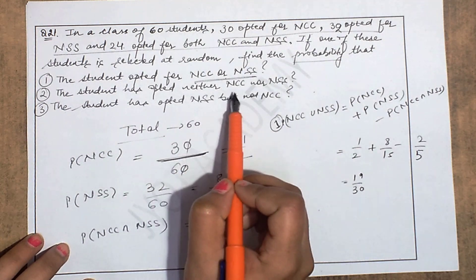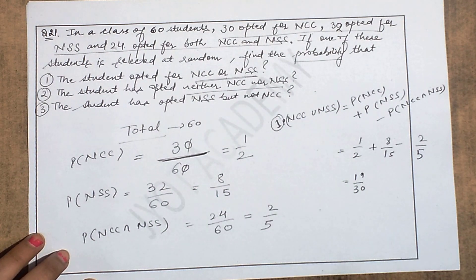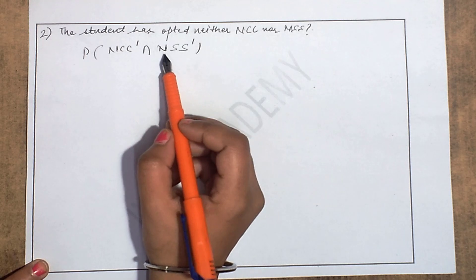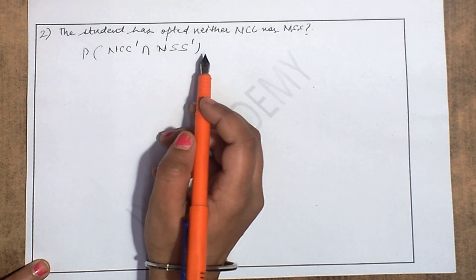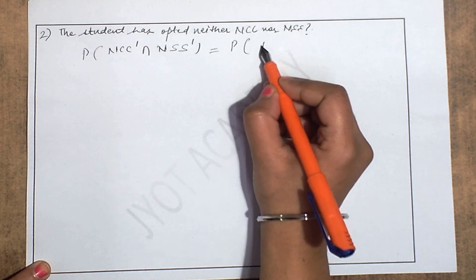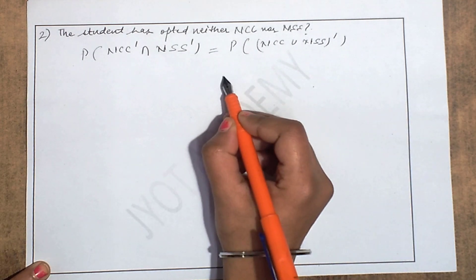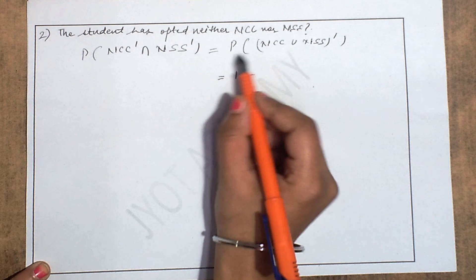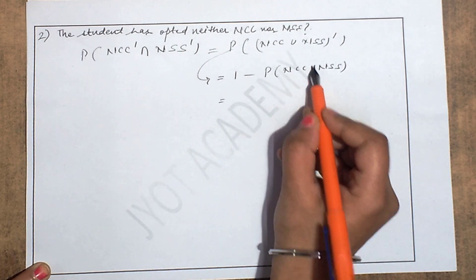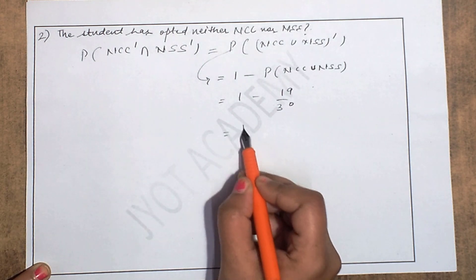Second part: the student opted for neither NCC nor NSS — so P(NCC' ∩ NSS'). By De Morgan's Law this becomes P(NCC ∪ NSS)', which equals 1 − P(NCC ∪ NSS). We just found P(NCC ∪ NSS) = 19/30, so the answer is 1 − 19/30 = 11/30.